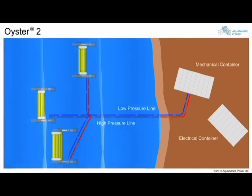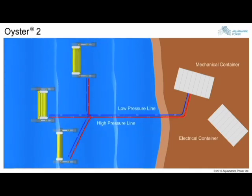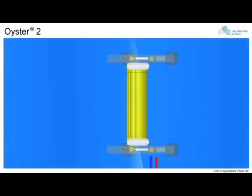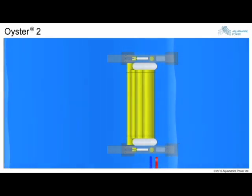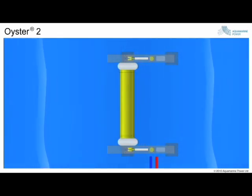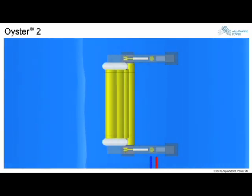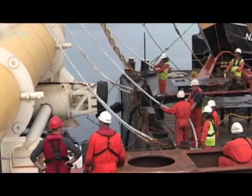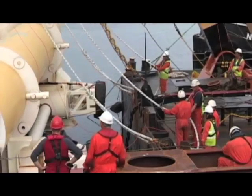In the future, subsea pipelines will connect multiple Oyster wave energy devices to a single onshore plant. Ultimately, Oyster will be installed in wave farms of several hundred connected devices, generating hundreds of megawatts of electricity.